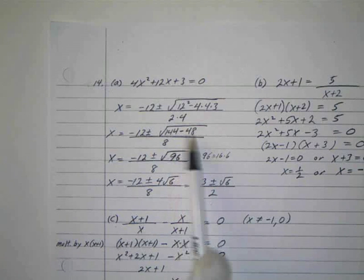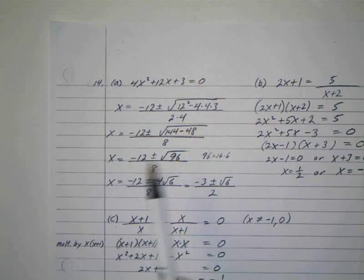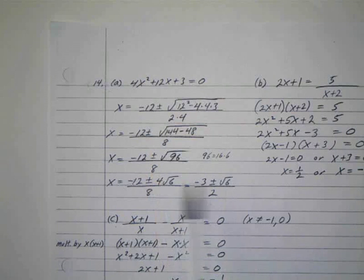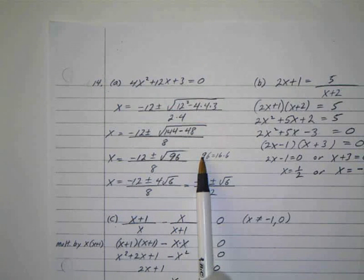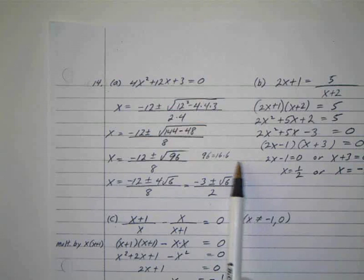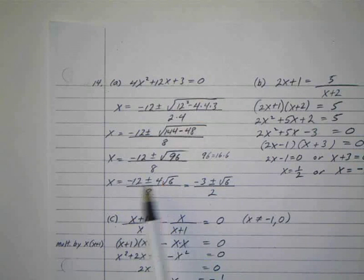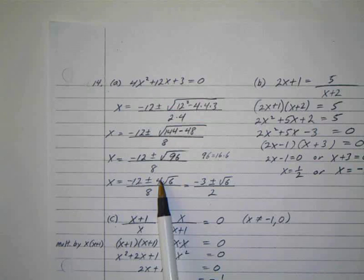12 squared is 144 minus 48. That's 96. There's 12, there's 8. I can simplify the square root. Well, 96 is the same thing as 16 times 6. The square root of 16 is 4.